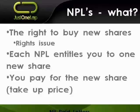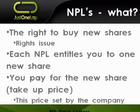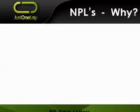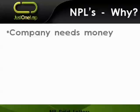The nil paid letter is that right to buy a new share, and the price you would have to pay is going to be set by the company — SAB in the example we mentioned. Why would a company do a rights issue and therefore have nil paid letters as a byproduct? Short answer: they need money.